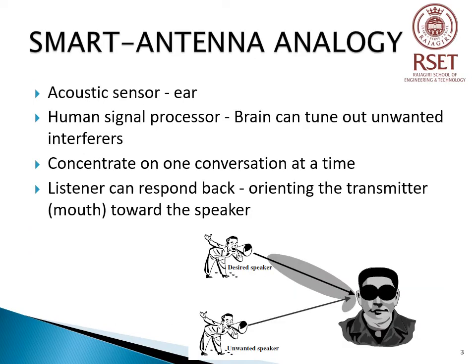To understand more about Smart Antennas, let us consider the Human Body System. Imagine two persons carrying out a conversation inside a dark room. The listener is capable of determining the location of the speaker because the voice of the speaker arrives at each acoustic sensor — that is, the ear — at a different time. The human signal processor, which is the brain, computes the direction of the speaker from the time differences or delays of the voice received by the two ears.